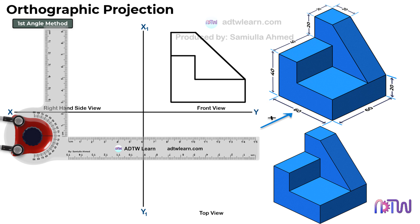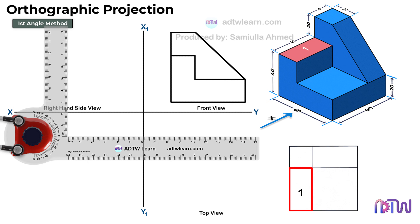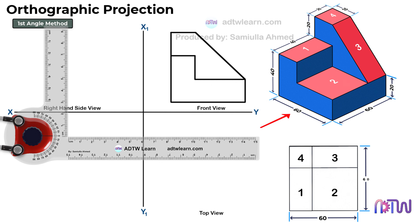Next, we will draw the top view of the object. When we see the object from the top, this is how it will look. There are a total of four different sections visible from the top view — sections 1, 2, 3, and 4. The top view is very simple to draw. The total width of the object is 60 millimeters and the total length is also 60 millimeters. The length and breadth of section 4 is 20 millimeters. Only these four dimensions are enough to draw the top view.